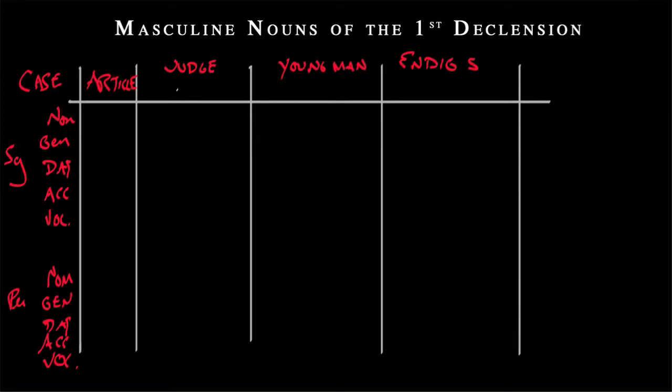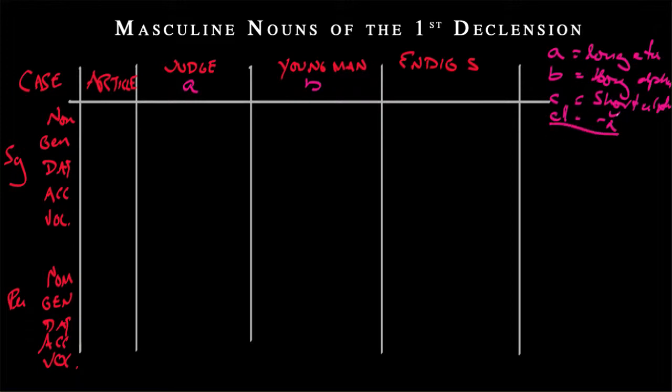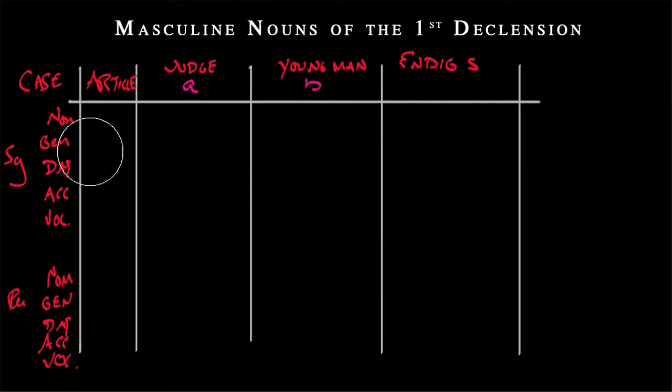Aristophanes actually gets really into this and makes fun of these sorts of issues in his play, The Clouds. But we're not going to get into all the complications right now. We're just going to keep this easy. And then we're going to look at the endings, in particular, of these two types. And you'll remember from learning first declension nouns of the feminine persuasion, I'd say, that we had four different types, four different classes. We had A, B, and then C and D.